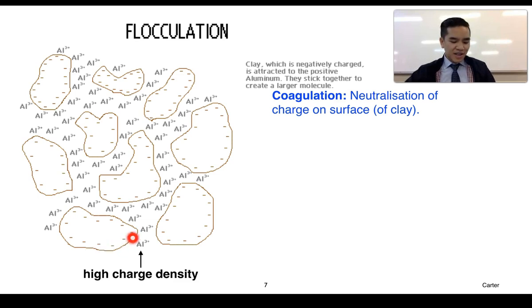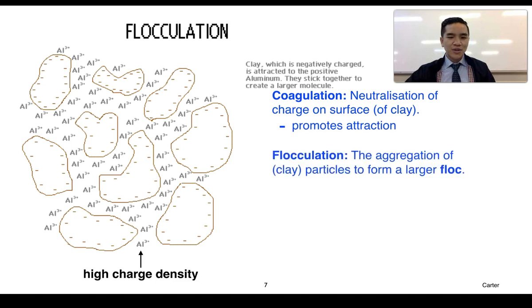Upon neutralisation of this negative charge, this then allows for the attraction of clay particles with one another. So the aggregation of the clay particles to form larger particles, what we call flocs, is called flocculation. So we can see that this clay particle with its negative charge is surrounded by aluminium ions of high positive charge. They can now associate with one another to form a much bigger component called a floc. These flocs then can settle as sediment due to their size.